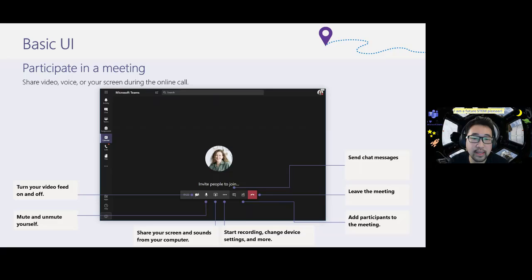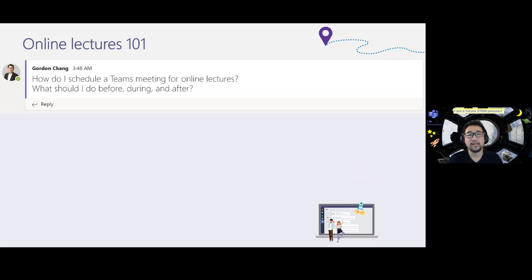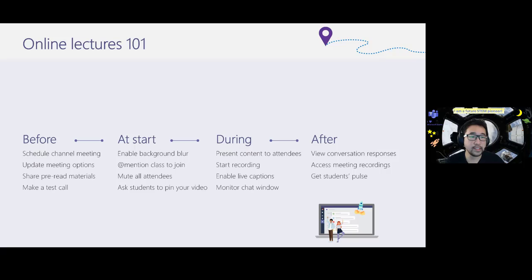When you're in the meeting, these are the basic UI elements — different buttons at the bottom. You can turn your video on and off, mute yourself, and I'd definitely recommend opening the chat button, which shows the meeting chat on the right side so you can monitor if anyone is speaking or asking questions. Let's go through the before, during, and after step by step.